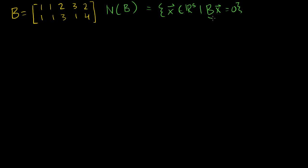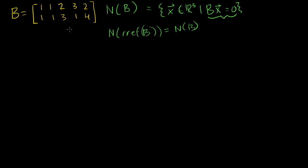I'm just trying to find the solution set to this equation right here. We've seen before that the null space of the reduced row echelon form of B is equal to the null space of B. So what's the reduced row echelon form of B? This is actually almost trivially easy, so let me just take a couple of steps. To get a 0 here, let's replace row 2 with row 2 minus row 1.